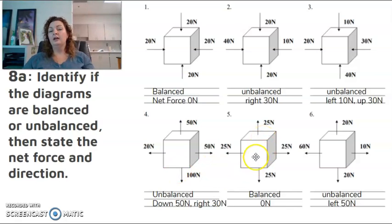Number five, you can see right and left, up and down are all the same, 25 Newtons. Therefore, it is balanced and I have zero Newtons for my net force.